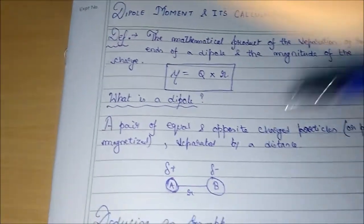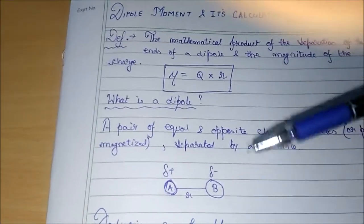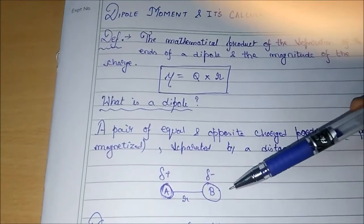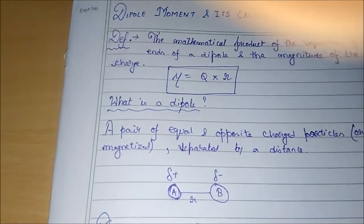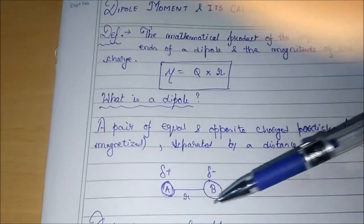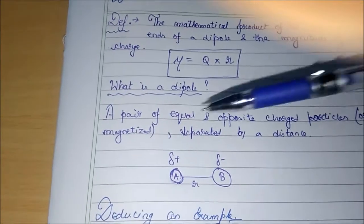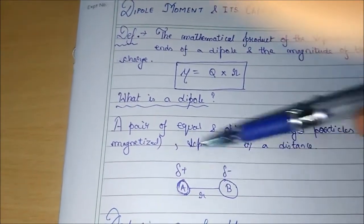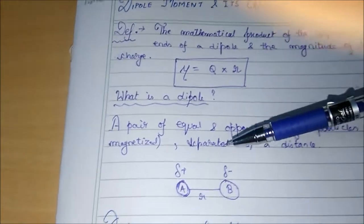In the given diagram, you can see that particle A and particle B are two different charge particles. One is having a delta positive (a small positive charge), another one is having a delta negative (a small negative charge), separated by a distance r. This is what a dipole is.